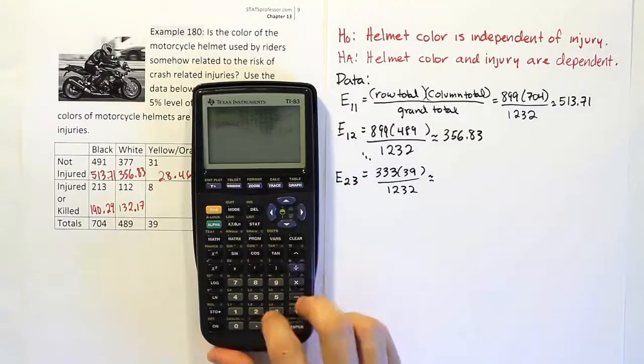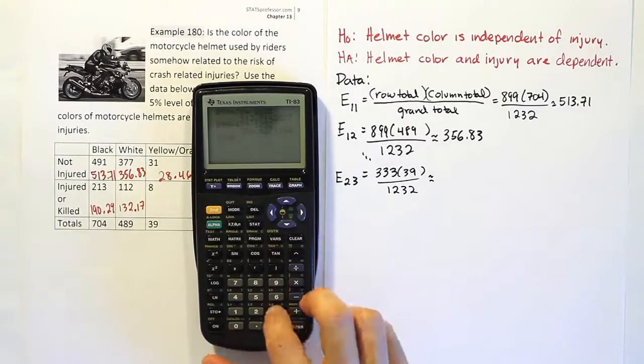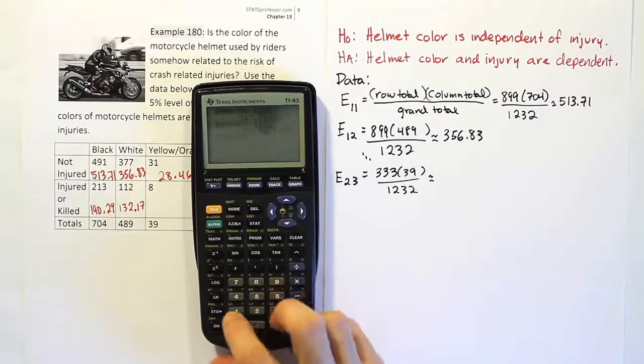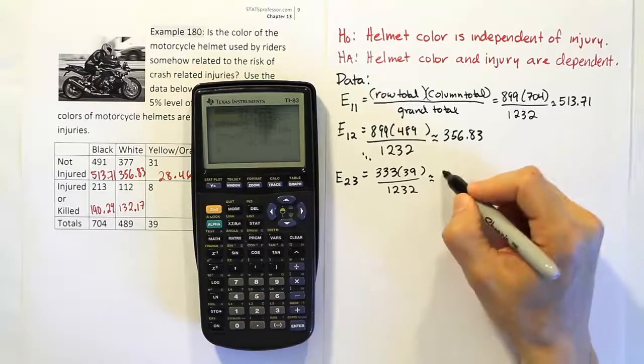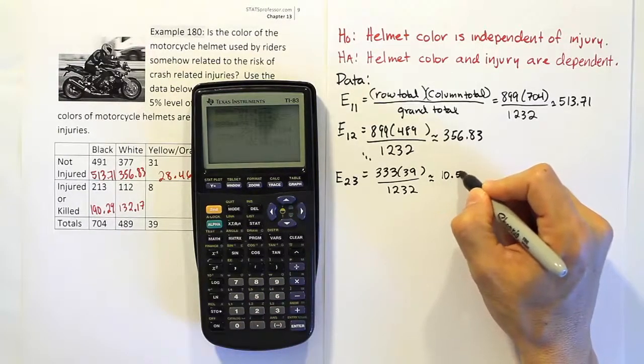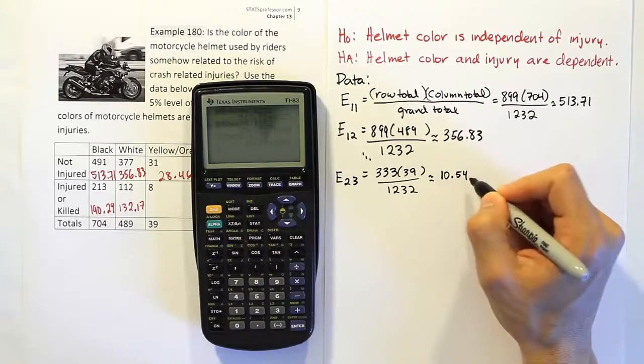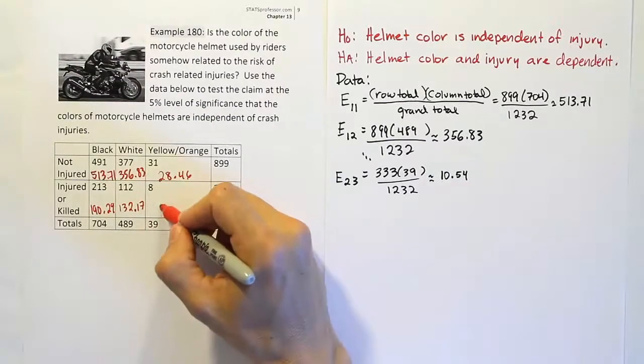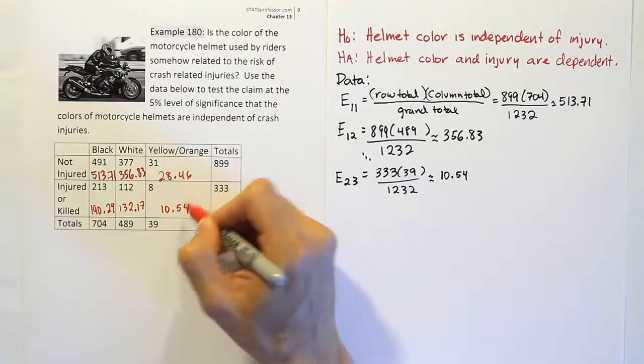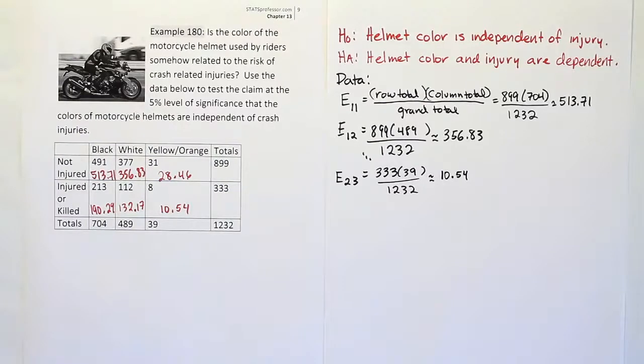Let's work it out. It will be 333 times 39 divided by 1,232. When you're done with that, you get approximately 10.54. That's what I'll put in that last position there. 10.54. There you have all your expected values filled in now.